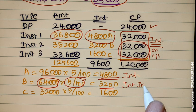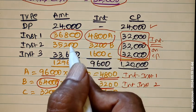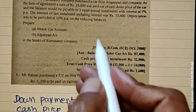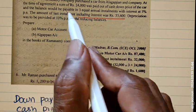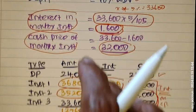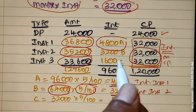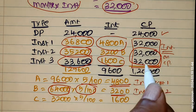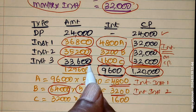For installment two, the balance amount is 32,000 into 2 = 64,000, into 5 by 100 equals 3,200 interest. For the last installment, the amount including interest is 33,600. So 32,000 plus 1,600 gives 33,600. Total Cash Price is 1,20,000 and total interest amount is 9,600.